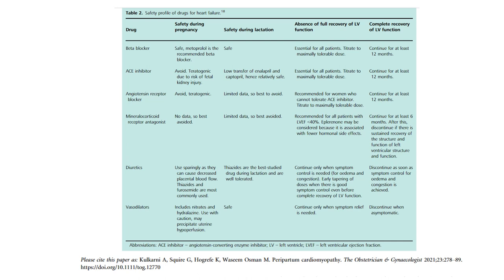Angiotensin receptor blockers are to be avoided and they are teratogenic during pregnancy. Limited data for lactation, so best to avoid. Mineralocorticoid receptor antagonist, no data, so best avoided during pregnancy. Limited data, so best avoided during lactation. Diuretics, use sparingly as they can cause decreased placental blood flow. Thiazides and furosemide are most commonly used. Thiazides are best studied drug during lactation and are well tolerated. Vasodilators includes nitrates and hydralazine, used with caution during pregnancy, severe precipitate uterine hypoperfusion, and it's safe during lactation.